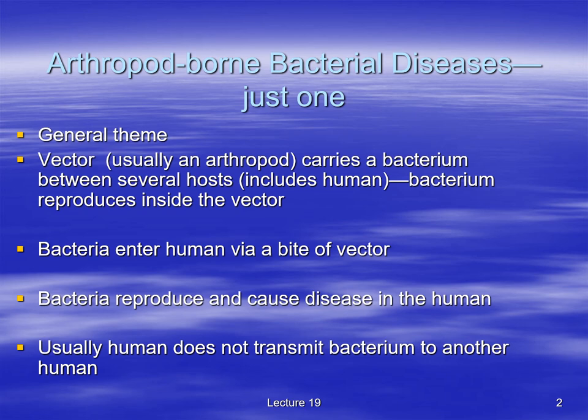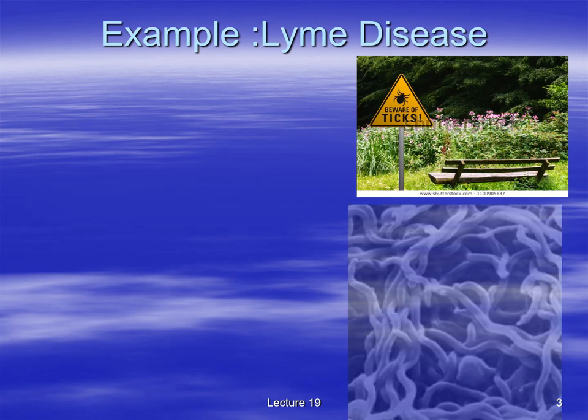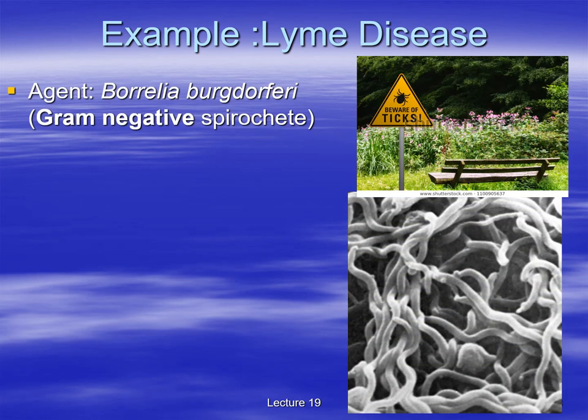Our one and only example of an arthropod-borne bacterial disease is Lyme disease. Lyme disease is growing in prevalence. It's caused by Borrelia burgdorferi, a gram-negative spirochete — those are the ones that jump around like pogo sticks using axial filaments.